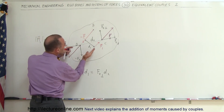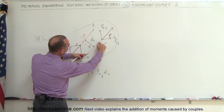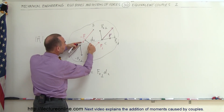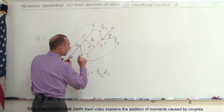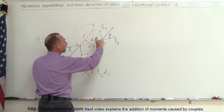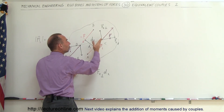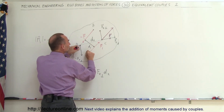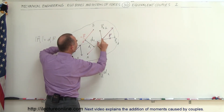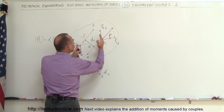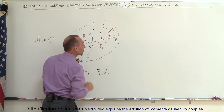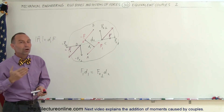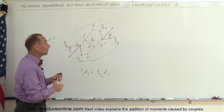So you can see that the magnitude of F1 times d1, forming a moment, is exactly the same as the component of the force perpendicular to the line connecting the two as we move them to a new location, times the new distance between them d2. That product will be exactly the same, and therefore they're called equivalent couples.